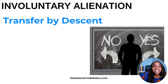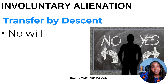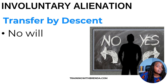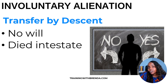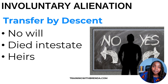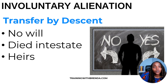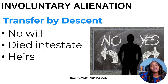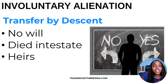Transfer by descent — what does that mean? This is where, unfortunately, you do not have a will, so if it was sudden, you didn't have a will already in place. You died intestate — that is the definition for dying without a will. So the ownership of that property and the rights are going to go to the heirs — individuals who are related to you, whether it's your spouse, your parents, your grandparents, your children, and so forth. They get the property because you did not have a will.